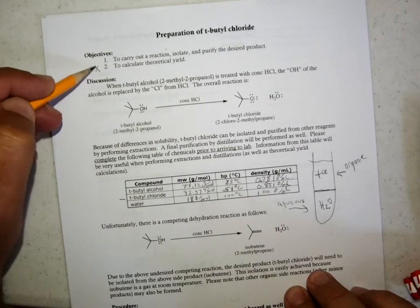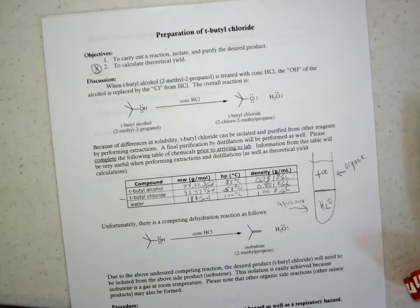including a calculation of percent yield. So calculating the amount that you would expect to get, and then given the amount that you actually get, you can calculate a percent yield.